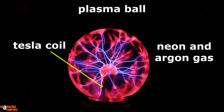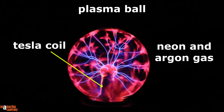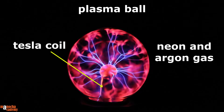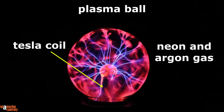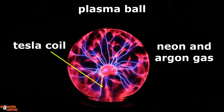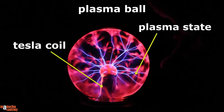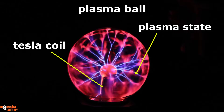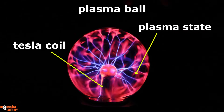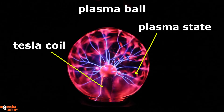There is a Tesla coil in the center that generates a very high voltage of a few thousand volts. When I switch it on, the gas inside the ball gets ionized and changes into plasma state. The plasma creates the glowing filaments and lightning effects that you see here.